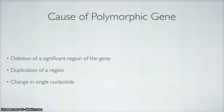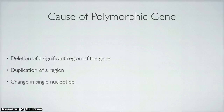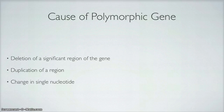What causes a polymorphic gene? A deletion of a significant region of a gene — since a polymorphic gene exists as two or more alleles, a deletion can create two alleles: one that has region X and one that does not. Or perhaps a duplication of a region, so one allele can have region X and another can have region 2X. Also, the change in a single nucleotide.